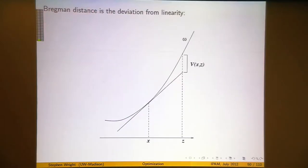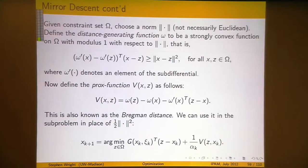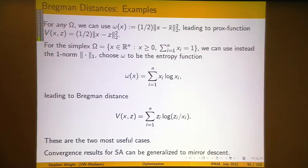A picture will help here. Little omega has to be a strongly convex function. v(x, z) is basically what you get by taking a tangent to the graph of little omega at the point x, and then seeing how different it is between omega and the tangent approximation by the time you get to z. That gives you v(x, z), and you can see that the further you move away from x, the more v is going to grow in either direction. So it's a valid measure of proximality. The idea is that you substitute that v into the sub-problem.